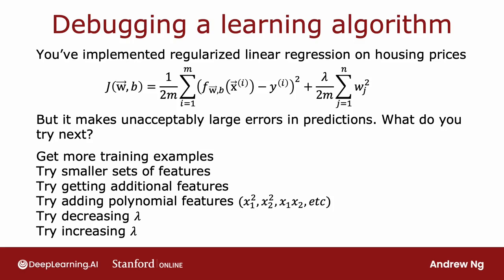It turns out that each of these six items either helps fix a high variance or a high bias problem. In particular, if your learning algorithm has high bias, three of these techniques will be useful. If your learning algorithm has high variance, then a different three of these techniques will be useful.